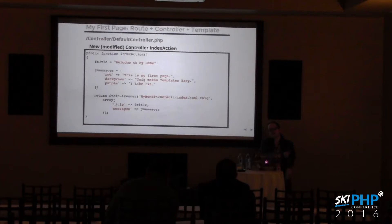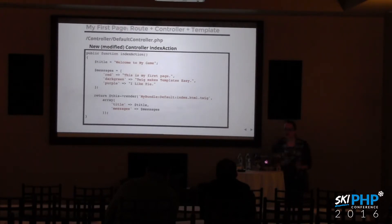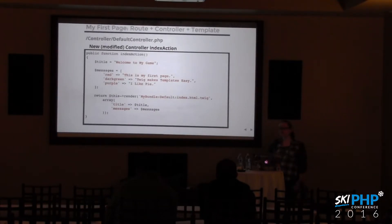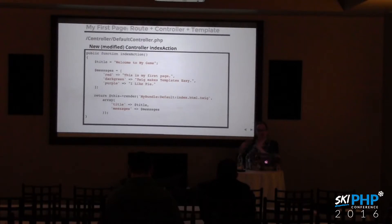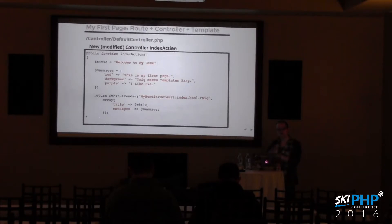Let's modify indexAction to transmit information from the controller into the template. We'll make a title variable with a simple string, and a messages array that's associative, using colors as keys and little messages as values. We return a render call with a string specifying the bundle, the directory for the template, and the template name. Following that, we send an associative array where the keys are the variable names in the template and the values are what those variables hold.